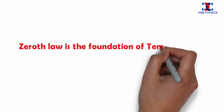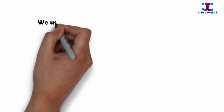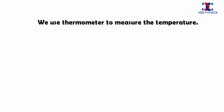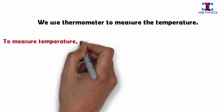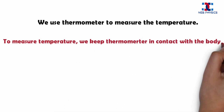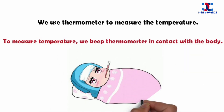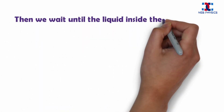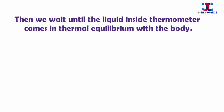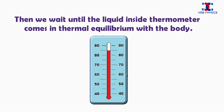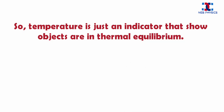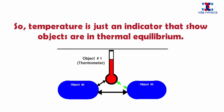Zeroth law is the foundation of temperature. We use a thermometer to measure temperature — we keep the thermometer in contact with the body and wait until the liquid inside the thermometer comes in thermal equilibrium with the body. So temperature is just an indicator that two objects are in thermal equilibrium.